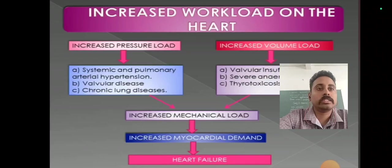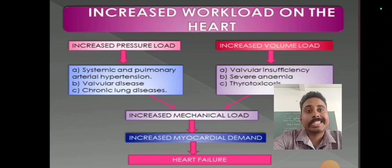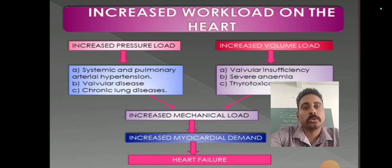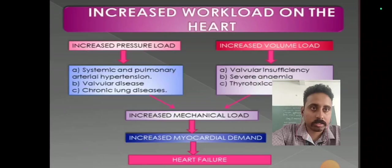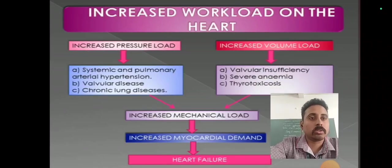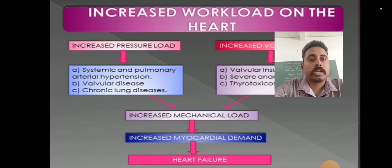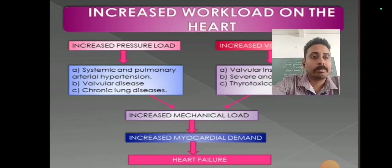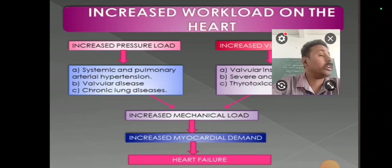The second etiology is increased workload on the heart, which is divided into: increased pressure load due to systemic and pulmonary artery hypertension, valvular disease, and chronic lung disease; and increased volume load due to valvular insufficiency, severe anemia, and thyrotoxicosis. These can lead to increased mechanical load and increased myocardial demand, which can in turn lead to heart failure.